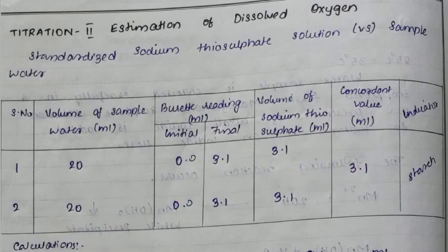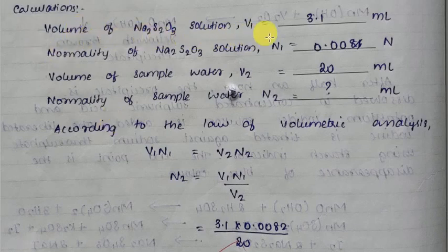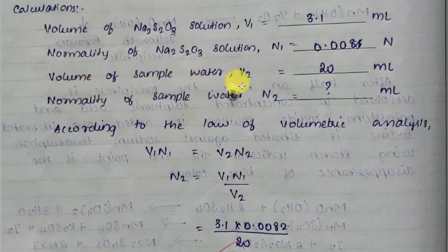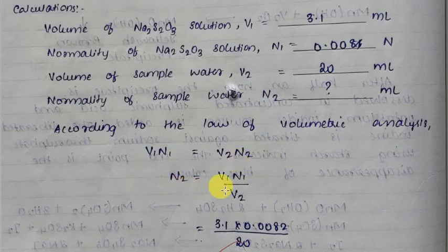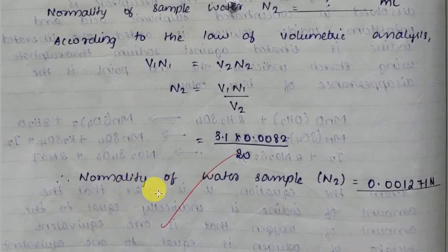Calculation for dissolved oxygen: Volume of sodium thiosulfate V1 = 3.1 ml. Normality of sodium thiosulfate N1 = 0.0082 N (result from Titration 1). Volume of water sample V2 = 20 ml. Normality of water sample N2 = ? According to the law of volumetric analysis, V1 × N1 = V2 × N2, so N2 = (3.1 × 0.0082) / 20 = 0.001271 N.